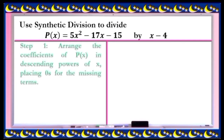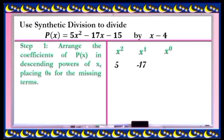There are several steps to follow. Step 1: arrange the coefficients of p(x) in descending powers of x, placing zeros for the missing terms. Our dividend is in the second degree, so the highest power is 2. Arranging in descending order, we have power of 2, power of 1, and power of 0. Get all the numerical coefficients: in the first term we have 5, in the second term negative 17, and the last term is negative 15.